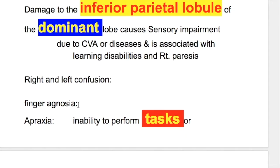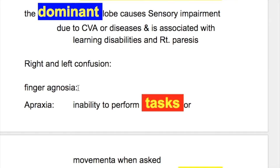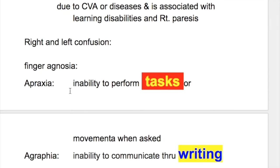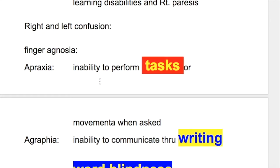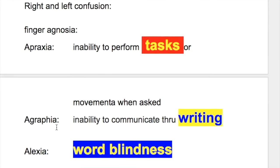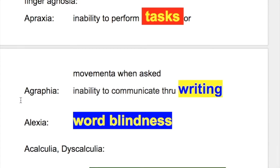In Gershmann syndrome, there is right-left confusion. There is finger agnosia — the patient doesn't remember the index or middle finger and cannot differentiate between the two. Apraxia is the inability to perform tasks or movements when asked to do so. Agraphia is the inability to communicate through writing, so there is a writing problem in agraphia.